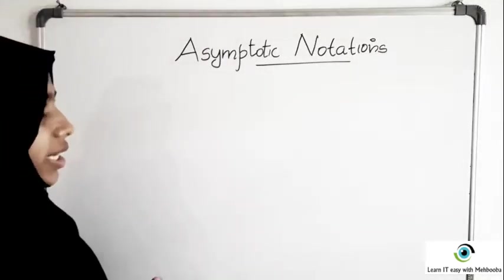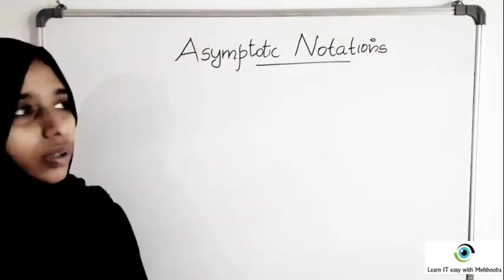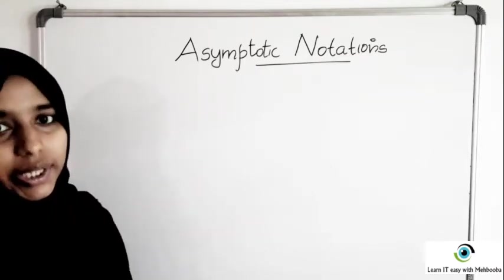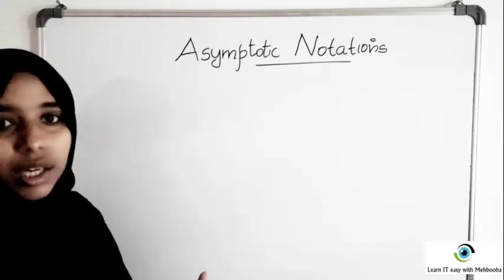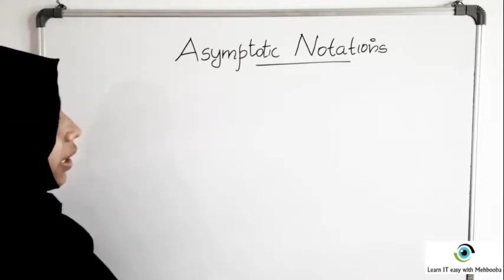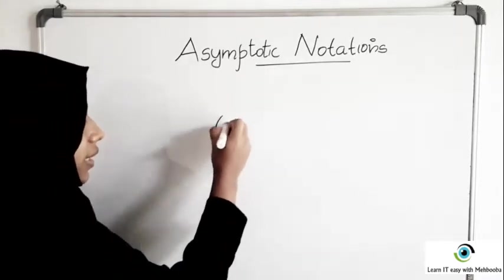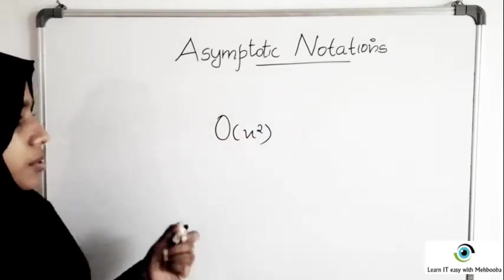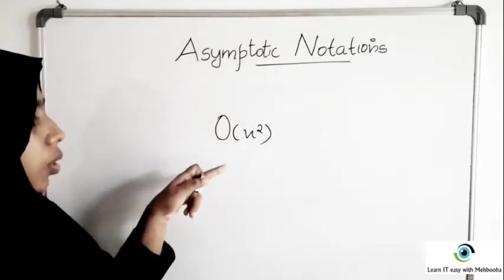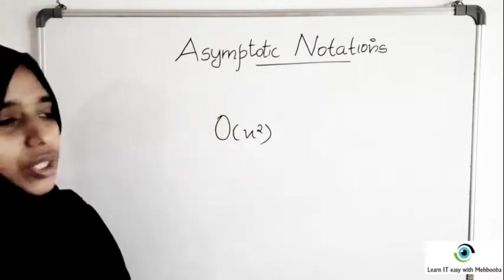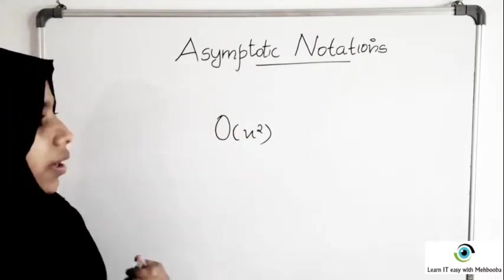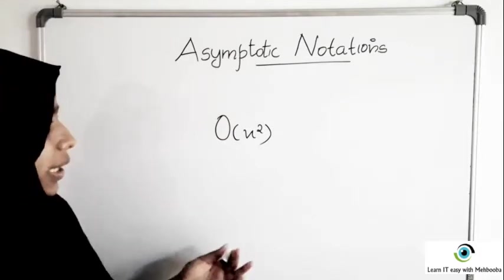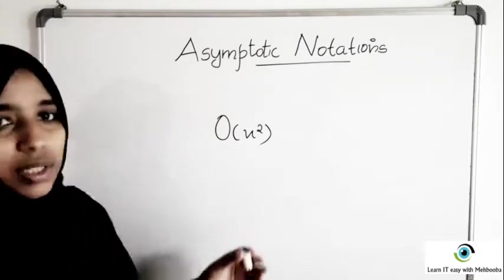In this video we will see various asymptotic notations which are used to denote the complexity of different algorithms. In the previous videos you might have seen me writing the complexity like order of N square. This O is actually an asymptotic notation named as Big O. There are a few more asymptotic notations and we will familiarize with all of them in this video.